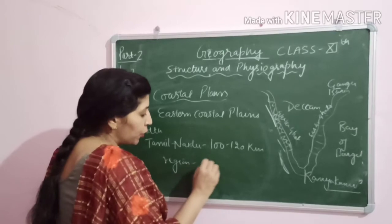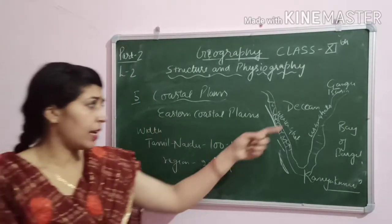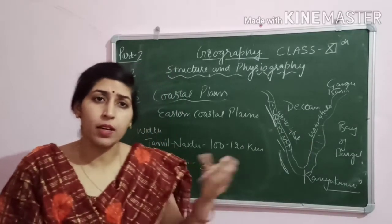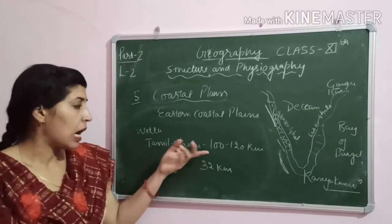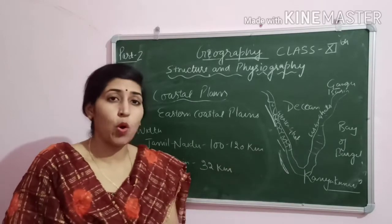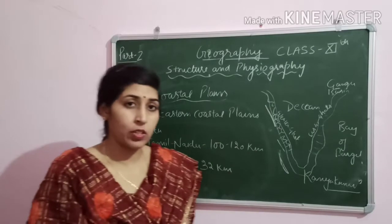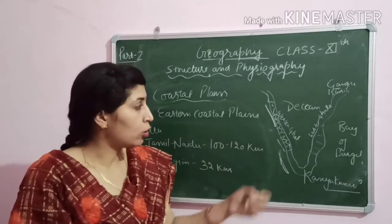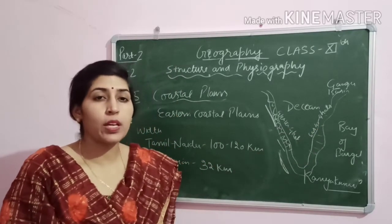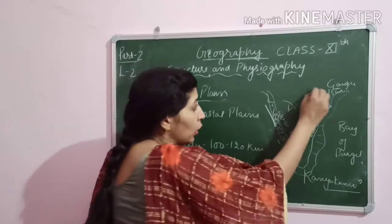The width of the eastern coastal plain varies by region and is up to 32 km in some areas, with the widest parts in Tamil Nadu. The rivers here drain into the Bay of Bengal and form deltas, making this a very fertile region.